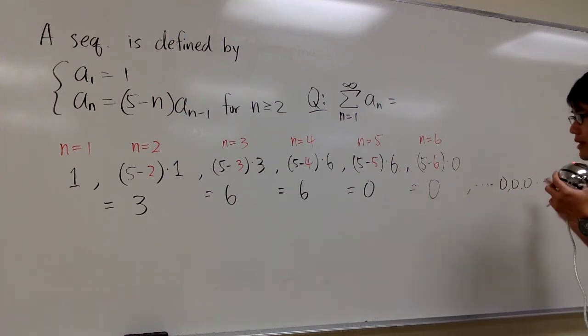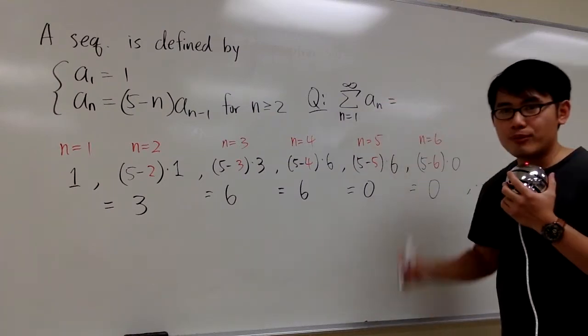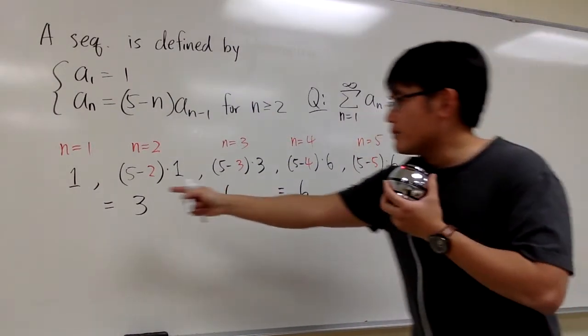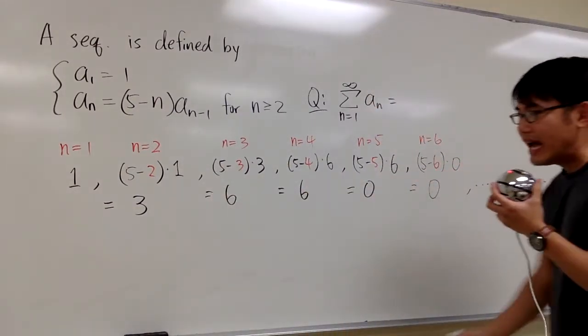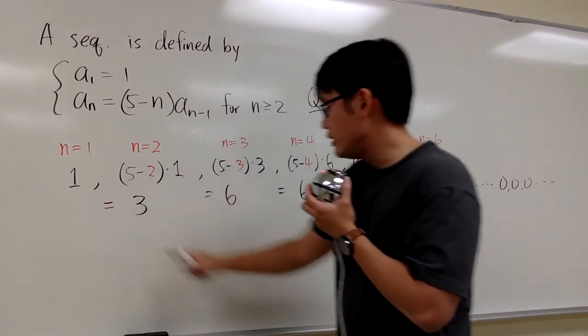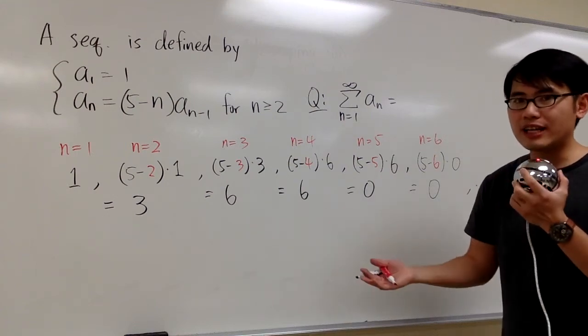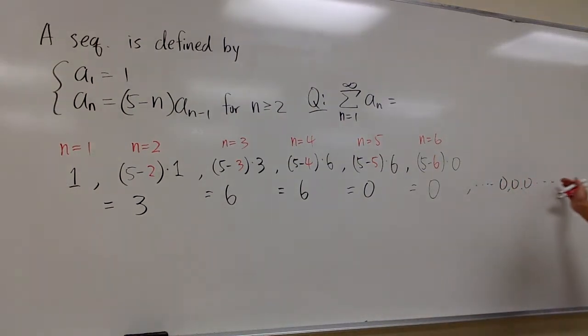So, the 0 won't contribute anything to the sum at all. So, what does this mean, then? If we want to add up all the terms, we only have 1, 3, 6, and 6. Those are the only numbers that we have to add up, because the rest will be just a bunch of 0s.